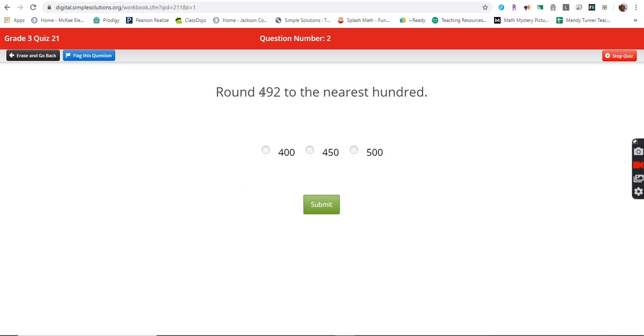Round 492 to the nearest hundred. Find the place, look next door, if it's five or more, we raise the score.